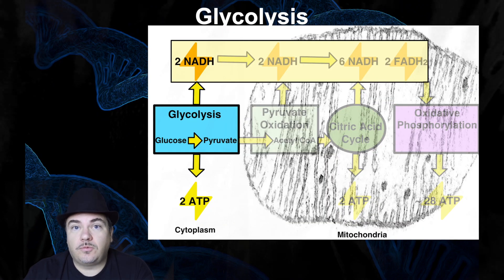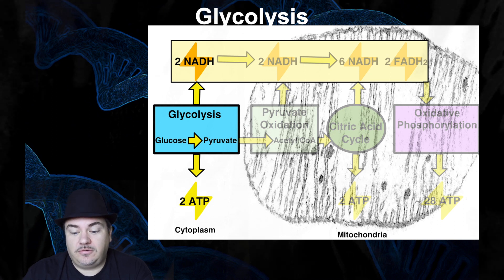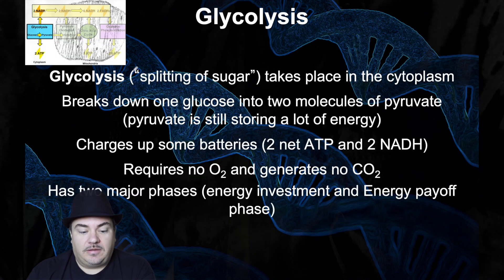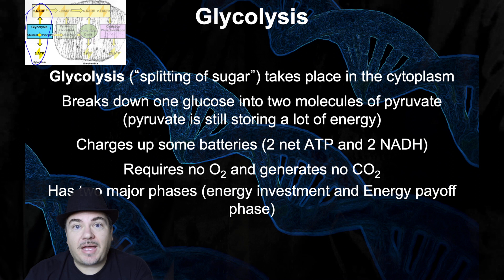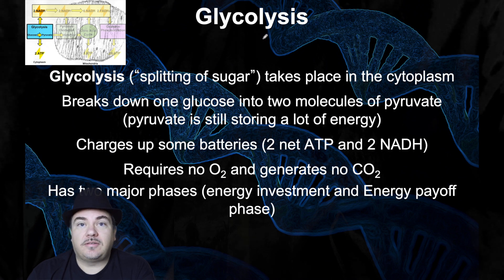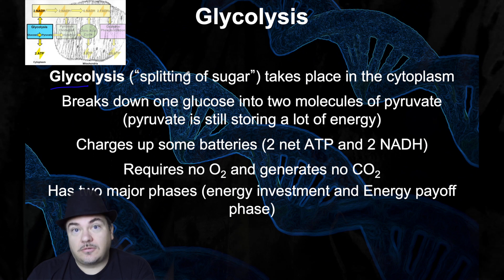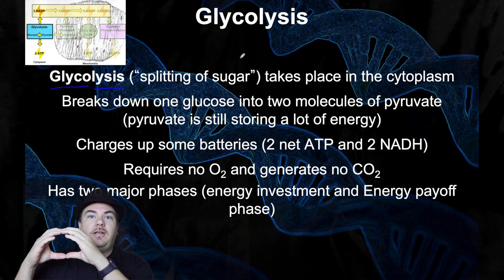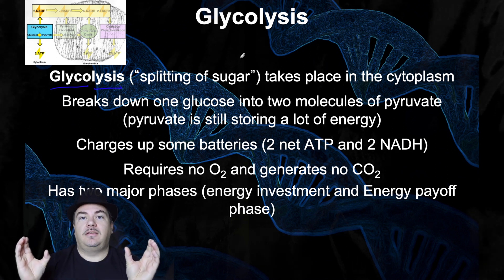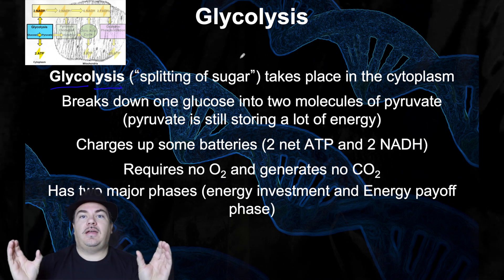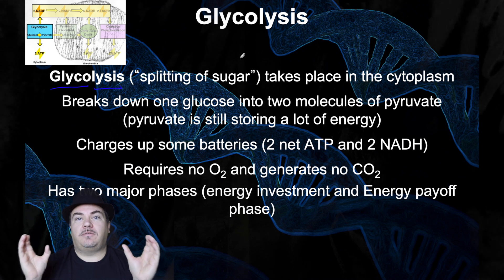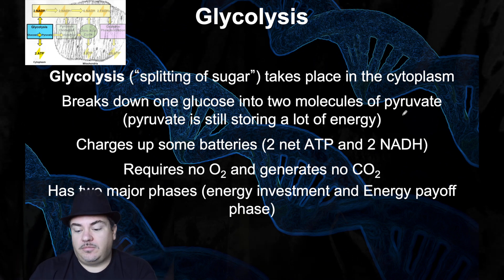Now we're going to start going through the different stages of aerobic cellular respiration, beginning with glycolysis. The first main stage is called glycolysis. That name is actually telling you what's happening — 'glyco' means glucose and 'lysis' means break. So glycolysis means you're taking a glucose molecule and breaking it in half. This glucose has six carbons; you break it into two molecules that each have three carbons. Those three-carbon molecules are called pyruvate.